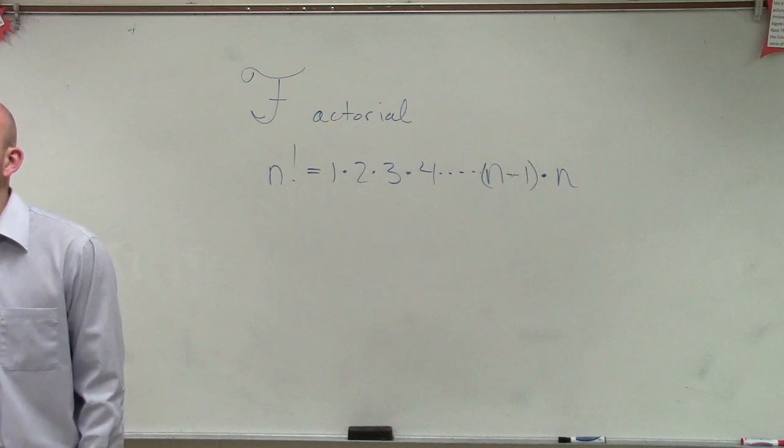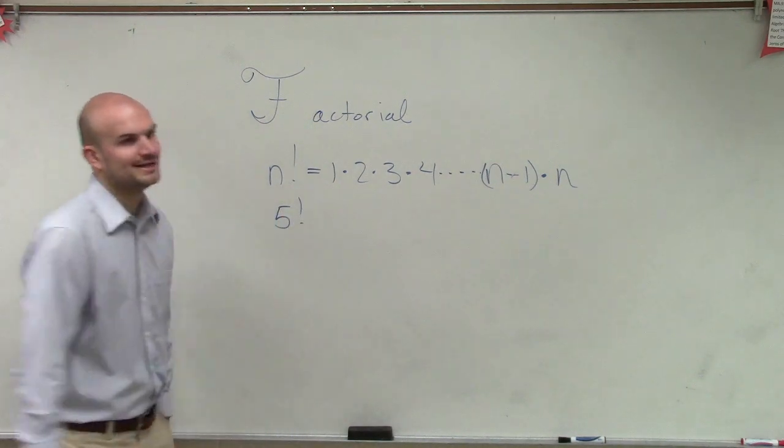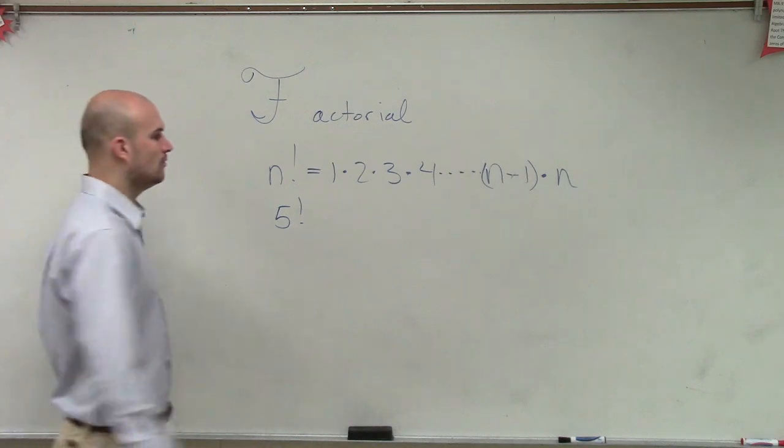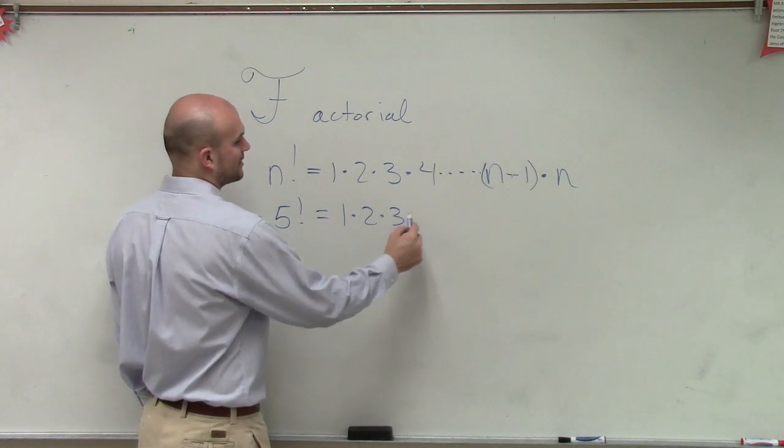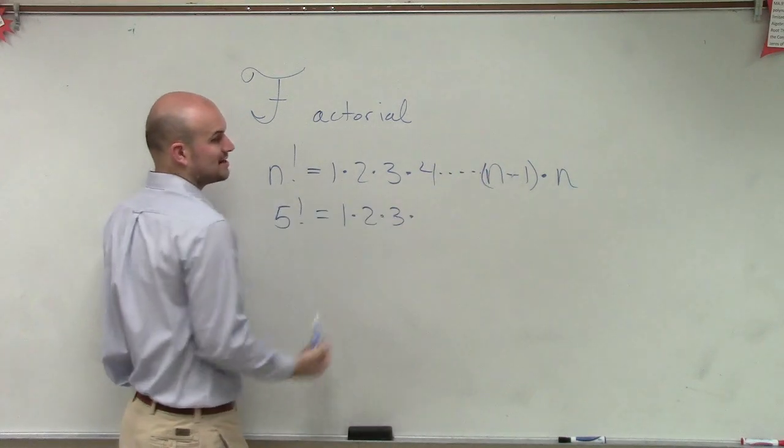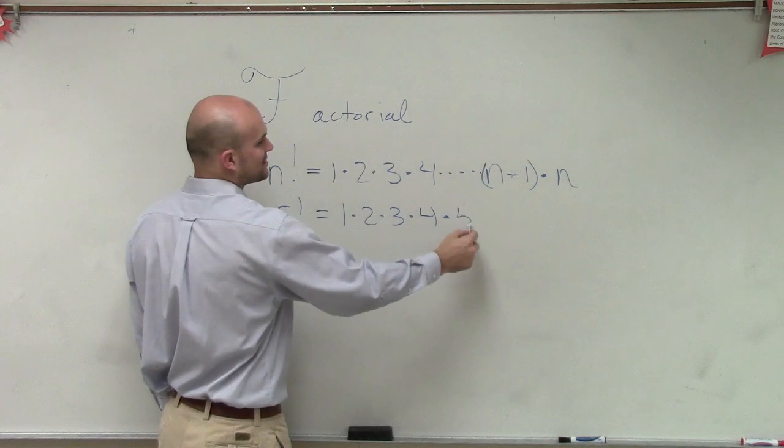Let's look at a factorial of 5. If I say what is 5 factorial, that equals 1 times 2 times 3 times (n-1), which would be 4, times 5.